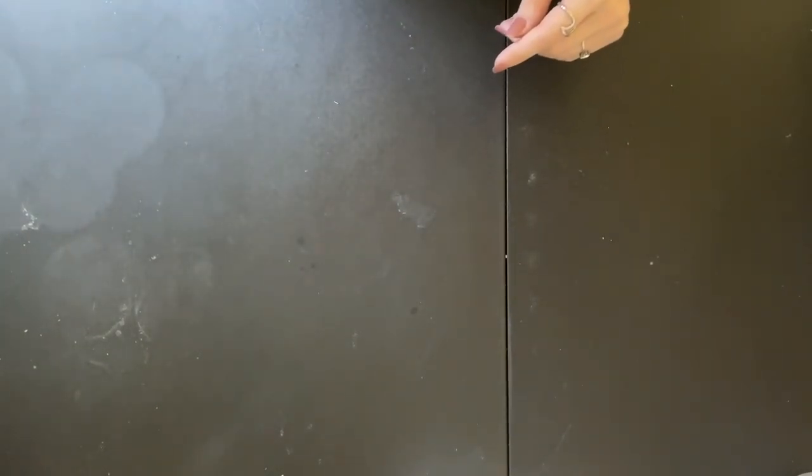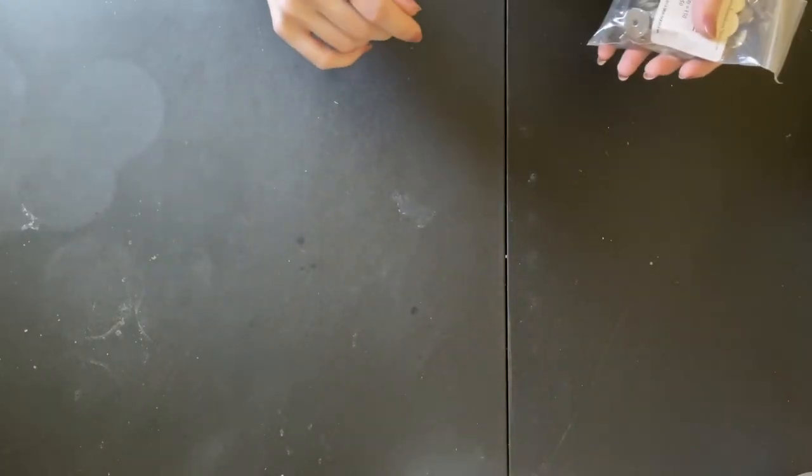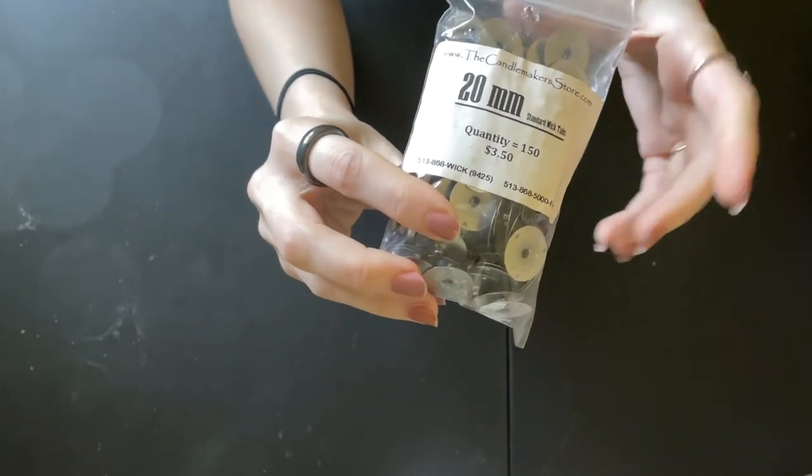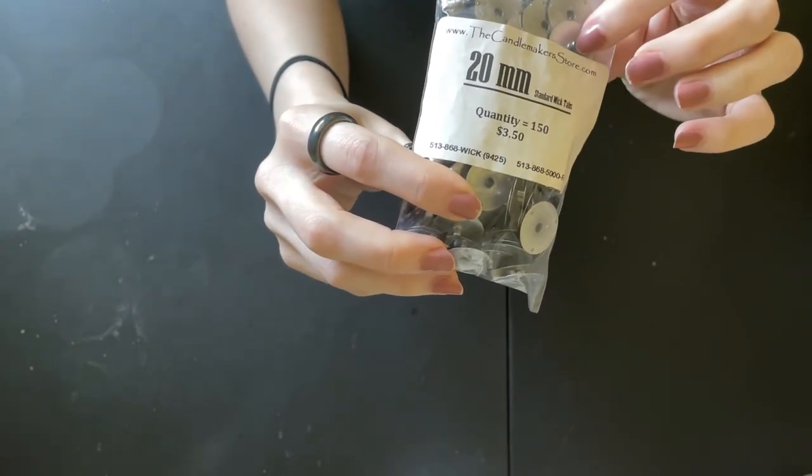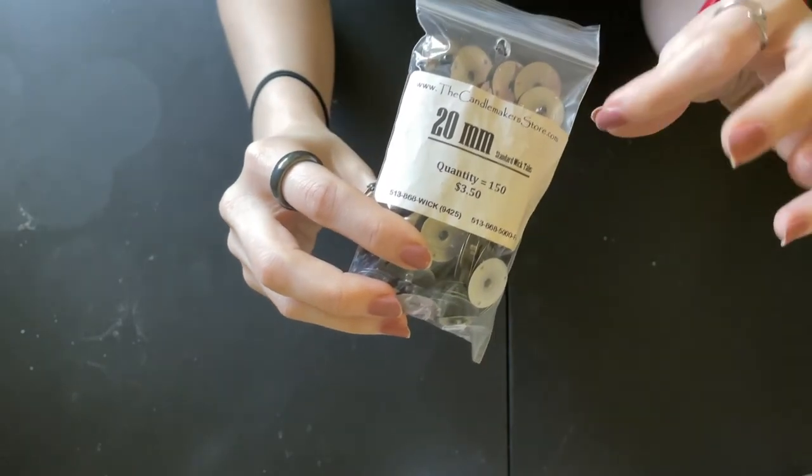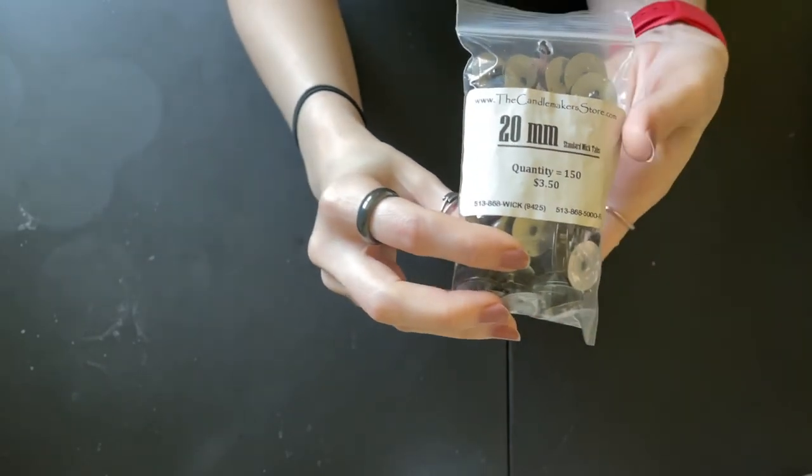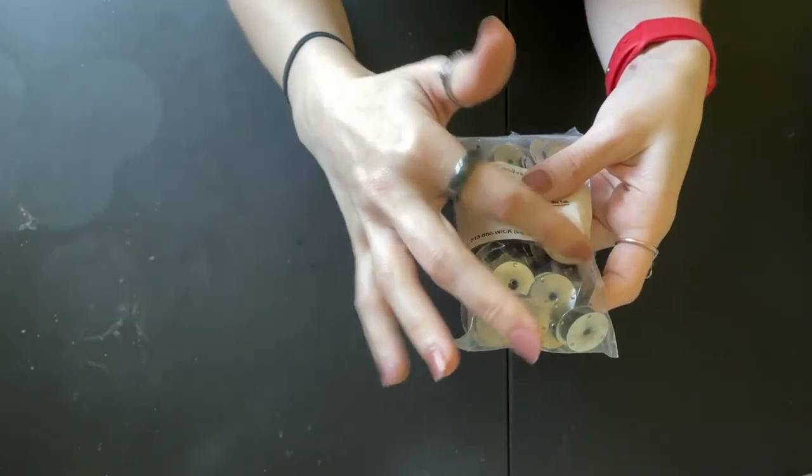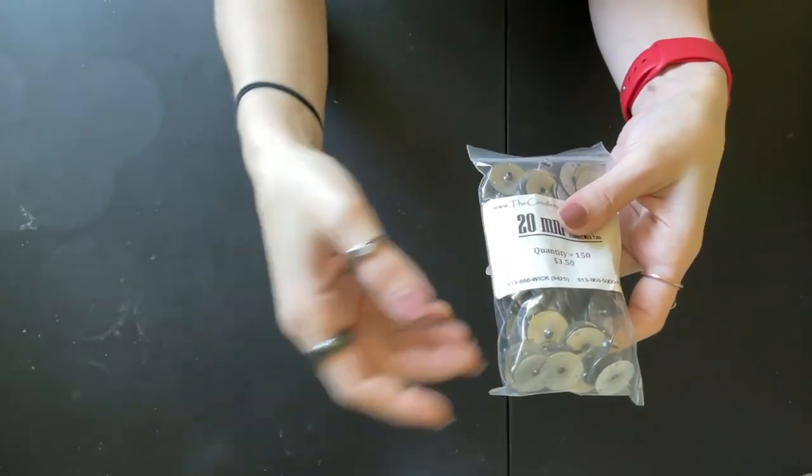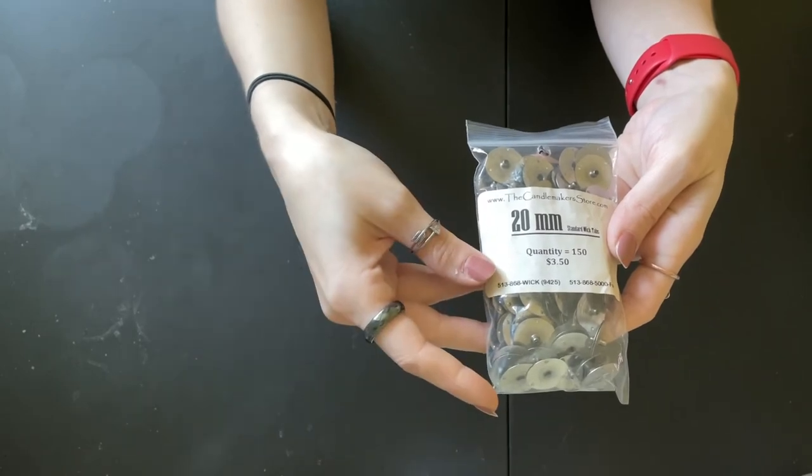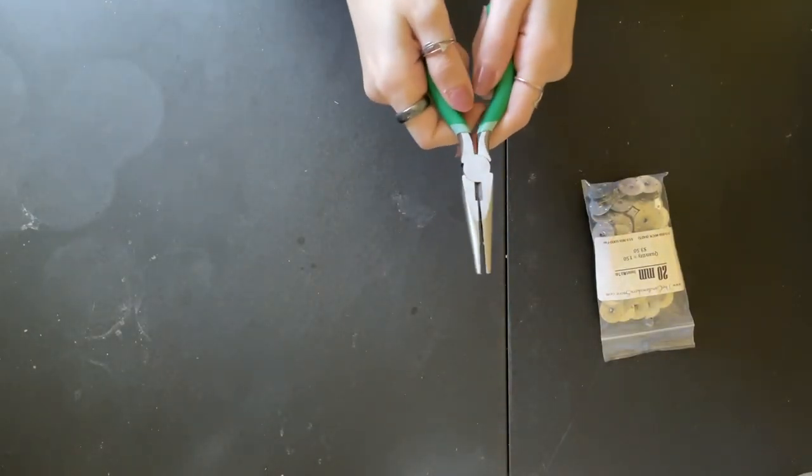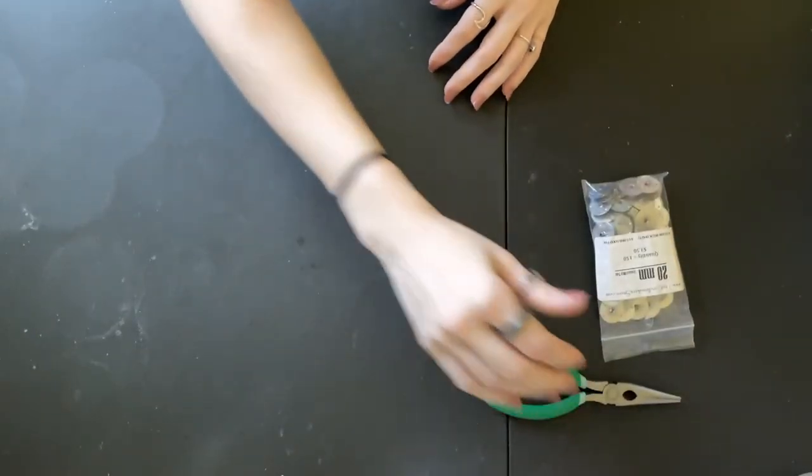So what you're going to need in order to do this is your wicks, obviously, and then you're going to need these tabs. They come in different sizes. These ones are actually quite short. I am going to be getting ones with a longer base, I guess, is what it would be called, but they're 20 millimeters. These are the same size as the wicks that I've been buying. They have a bigger size, and I think they also have a smaller size for like tea lights, but these work really well. And then you're going to need some needle nose pliers. I got these at Walmart for like six bucks, I think.